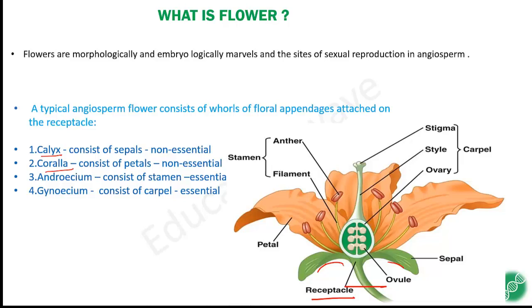Corolla consists of petals. The collection of petals is known as corolla, and they are also non-essential. The third one is androecium, which consists of stamens. These are all stamens, and we call them androecium. They are essential.